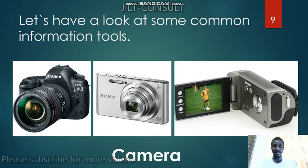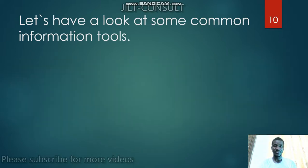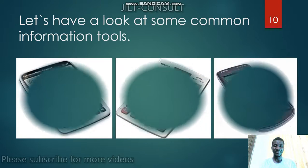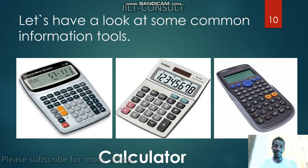Then we have camera. Look at the spellings, because when I ask you to write it, you should be able to spell it correctly — camera. Then we have calculator. We will be talking about it and what it is used for. If you see it, you will be able to tell it. This is in mommy's shop — they use it for calculations.